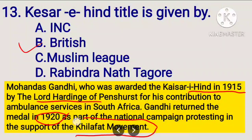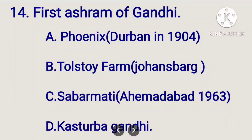The first ashram of Gandhi in India — the more modern first ashram — options are Phoenix, Tolstoy, and Sabarmati. The answer is Sabarmati Ashram.